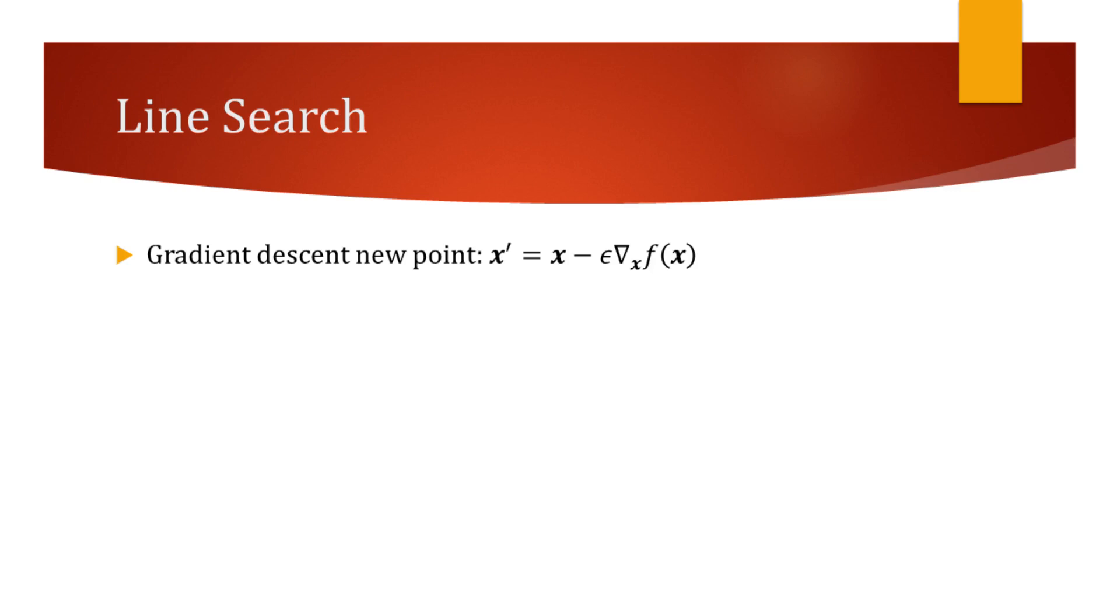Recall how the gradient descent works. At each iteration, we find a new point that's closer to the local minimum of the function by moving the point in the direction of the descent.